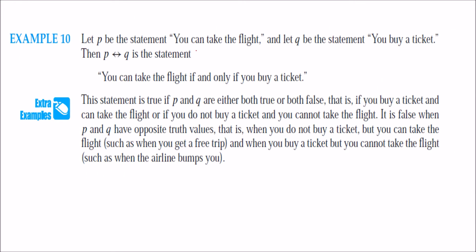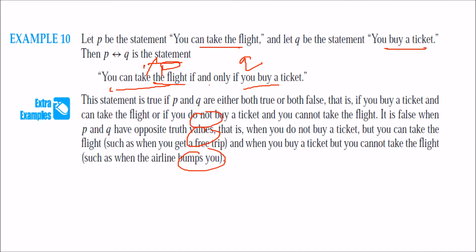Example of biconditional: p is 'you can take the flight,' q is 'you buy a ticket.' Then p if and only if q means: 'You can take the flight if and only if you buy a ticket.' This is true when both are true — you buy a ticket and take the flight — or both are false — you don't buy a ticket and you don't fly. Otherwise it is false.